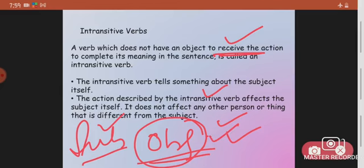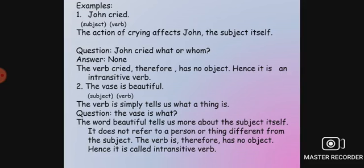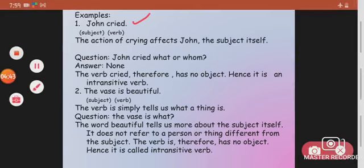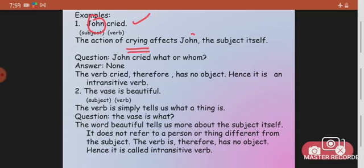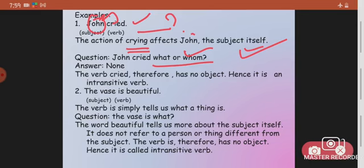For example: 'John cried.' The action of crying affects the subject only — John is the one crying, and the object is not involved. The sentence is complete and makes sense. If you ask 'what?' or 'whom?', it does not answer either. The verb 'cried' has no object, hence it is an intransitive verb.